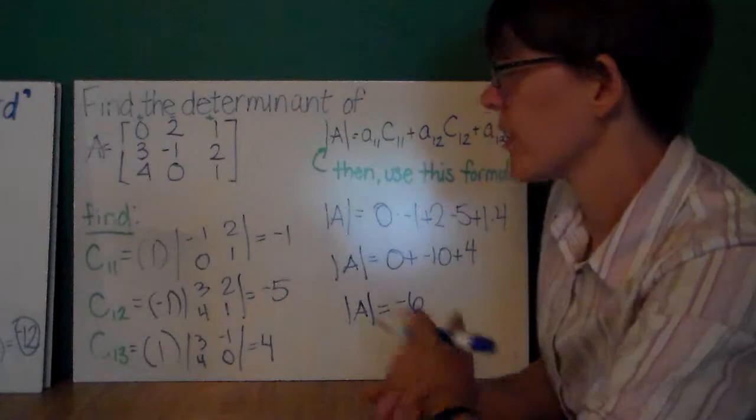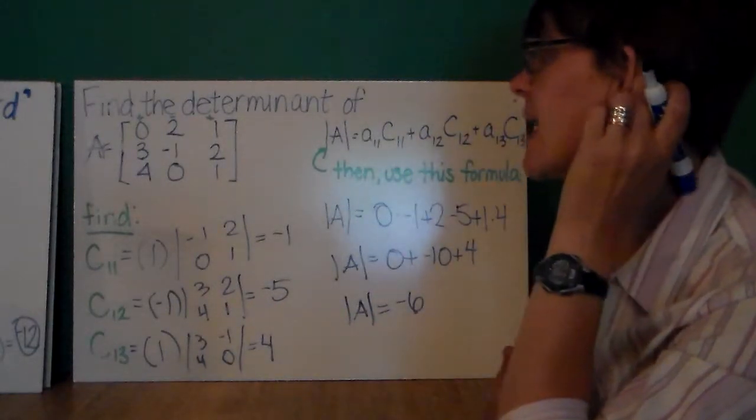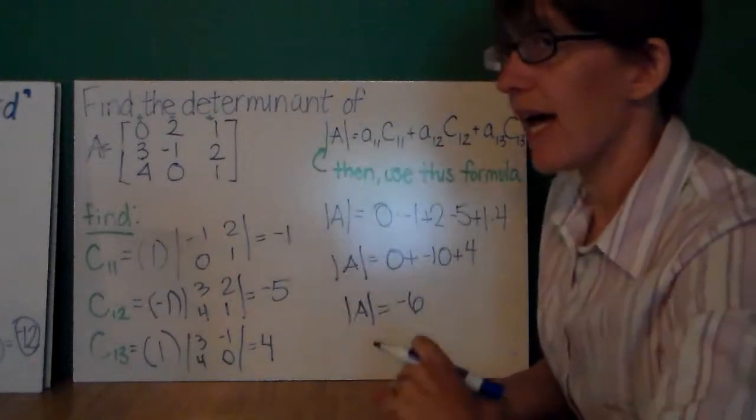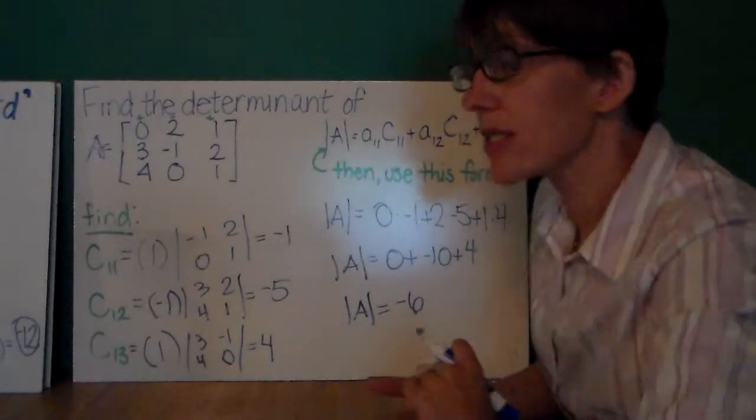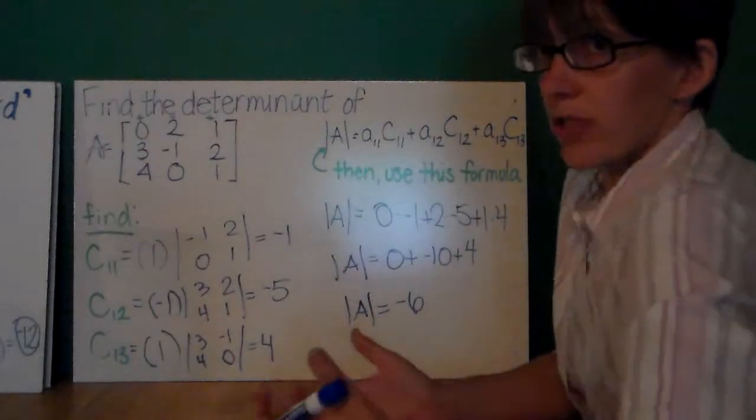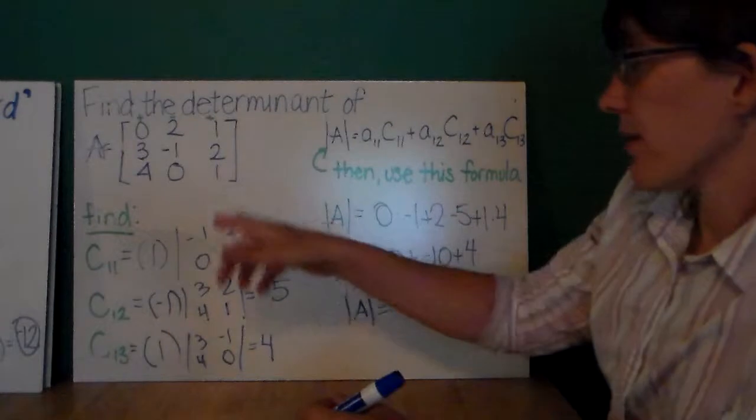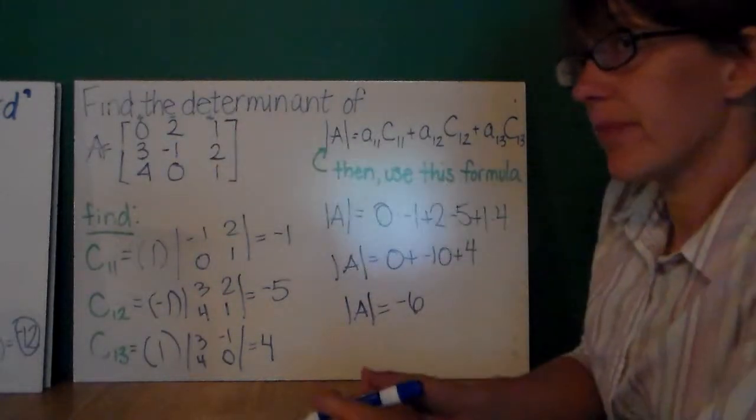The great thing is, I know you're thinking this is great, but the great thing to me is that if you have a really big matrix, you only need to work with one row. Just pick one row, and it can be easy to work with. Now, here, I just randomly selected row 1.